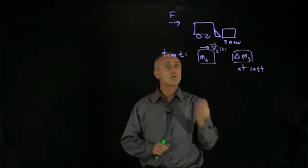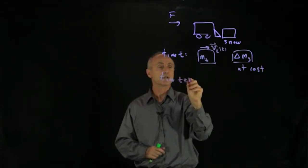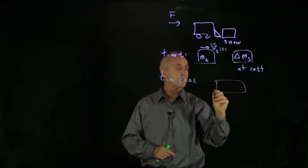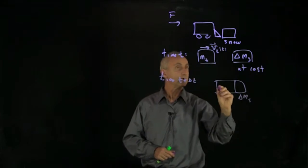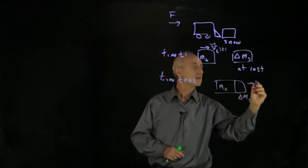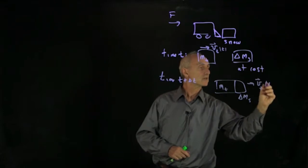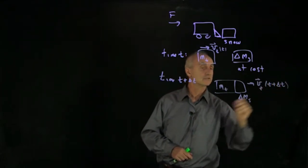So now what happens at time t plus delta t? Well, the truck has picked up the mass of the snow and the truck has now changed its speed. So that's at time t plus delta t.